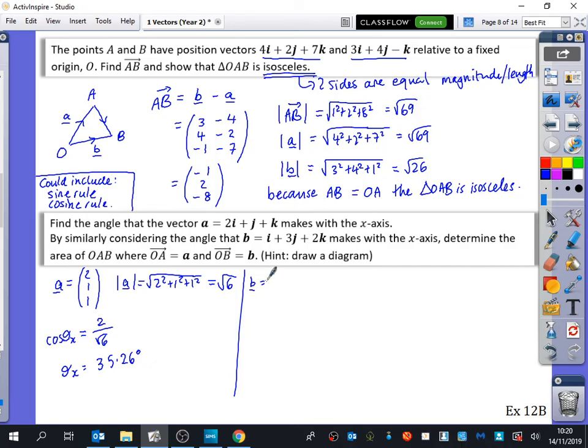I'm going to do the same process with B, which is 1, 3, 2. So the modulus of B, or the magnitude of B, 1 squared plus 3 squared plus 2 squared. That's 9, 10, 14, root 14. So now we're going to work out the angle that this one makes, which is going to be the x bit is 1. So it's 1 over root 14. Inverse cos of that. And we get 74.50 degrees. That's rounded to two decimal places. So we've done the beginning bits that the question has asked for us to do. We now need to go like a stage further and see what it actually wants us to do. It says, determine the area of OAB. So we're going to draw a diagram. I can't draw a 3D diagram, so I'm going to draw a 2D diagram.